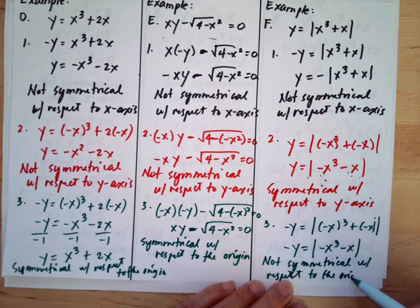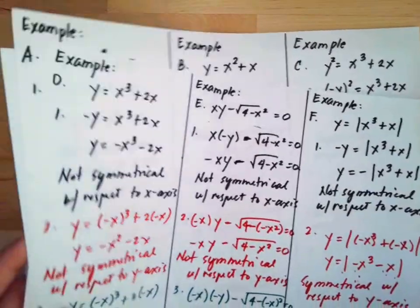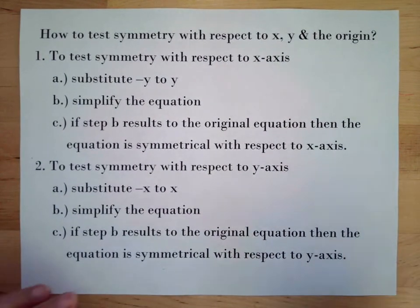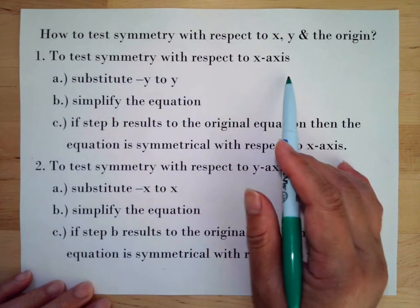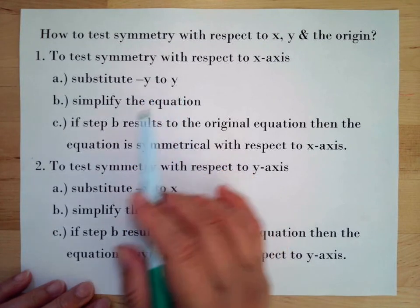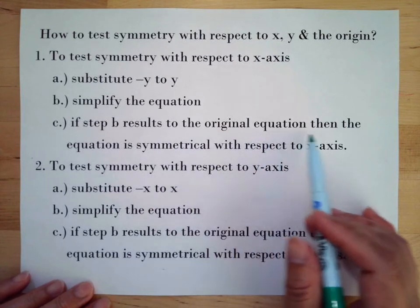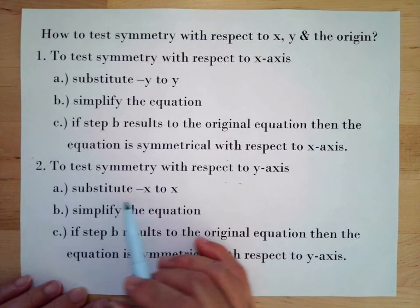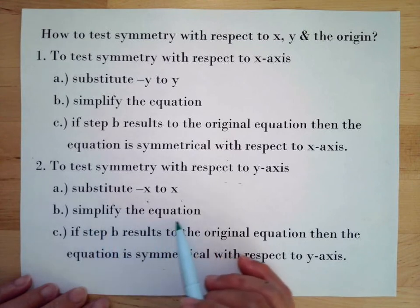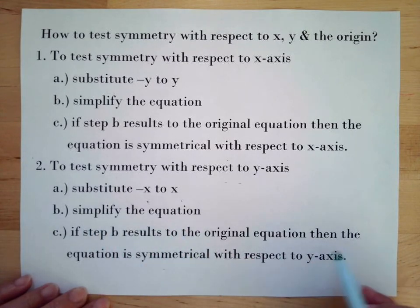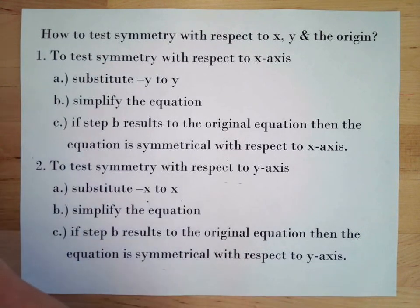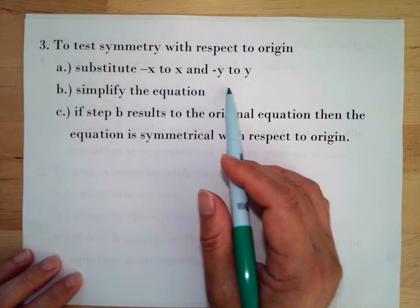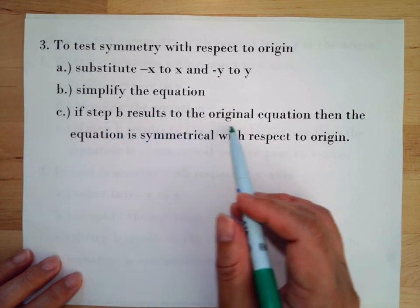In summary: to test symmetry with respect to the x-axis, substitute negative y for y and simplify — if the result equals the original equation, it is symmetrical with respect to the x-axis. To test symmetry with respect to the y-axis, substitute negative x for x and simplify — if the result equals the original, it is symmetrical with respect to the y-axis. To test symmetry with respect to the origin, substitute negative x for x and negative y for y and simplify — if the result equals the original equation, it is symmetrical with respect to the origin.